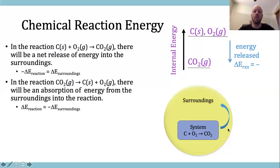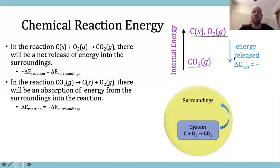Why would something choose to remain as carbon and oxygen if it could be CO₂ and exist in a lower, more stable molecule? The giving off of energy here is negative — the system is giving off energy. So you'll see the delta E RXN: the change in energy of the reaction is negative. It means the change in energy of the reaction is giving off energy — the energy is being given off. The products are lower in energy than the reactants. The system is giving off the energy to the surroundings.